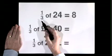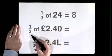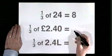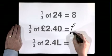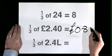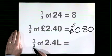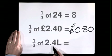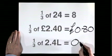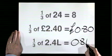One third of twenty four is eight. One third of two pounds forty is no pounds eighty, or eighty p. One third of two point four litres is zero point eight litres.